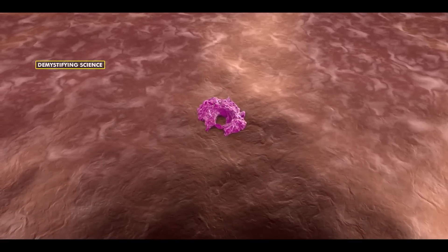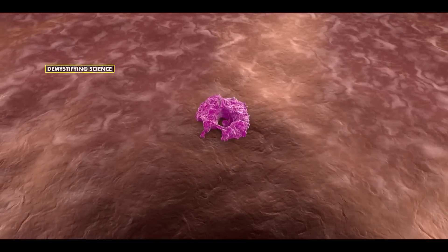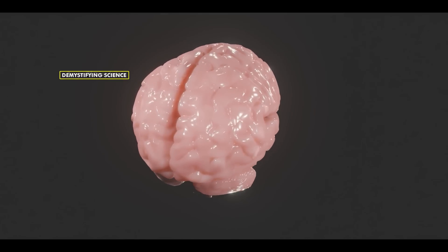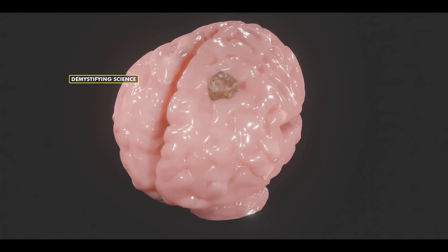Tumors are defined as the abnormal growth and development of cells. When this development occurs in the brain, it's referred to as a brain tumor.